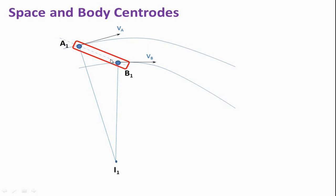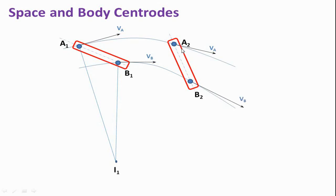For the next instant, the link moves to position A2 B2. Similarly, we draw tangents to the curves representing velocity Va2 and Vb2, as A2 B2 has displacement in the clockwise direction. We then draw a perpendicular to Va2 and a perpendicular to Vb2. Their intersection point gives instantaneous center I2 for the new position A2 B2 of link AB.